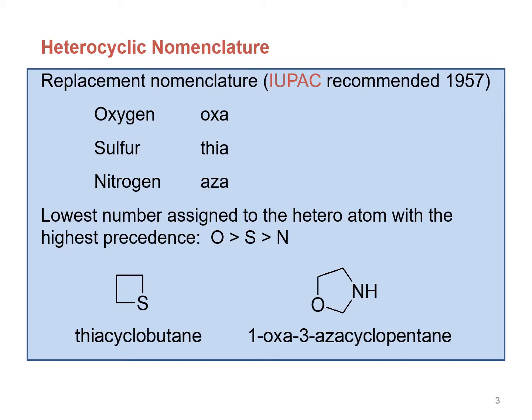Now about the nomenclature of heterocyclic compounds. IUPAC recommended replacement nomenclature for heterocyclic compounds. According to this nomenclature, we have to add 'oxa' if the heteroatom is oxygen, 'thia' if the heteroatom is sulfur, and 'aza' if the heteroatom is nitrogen, before the name of the parent homocyclic compound.